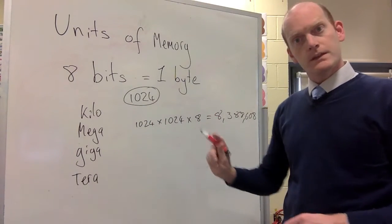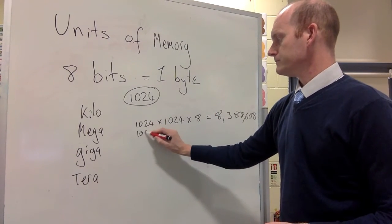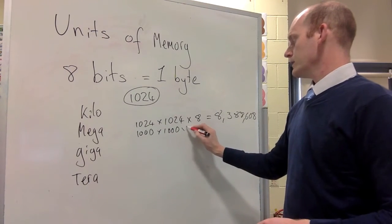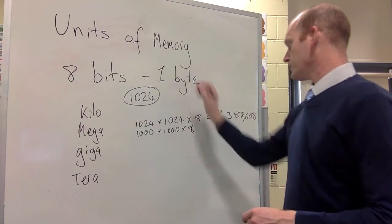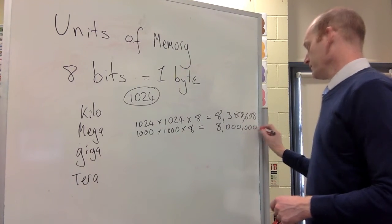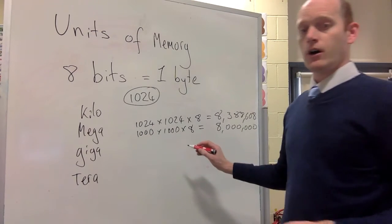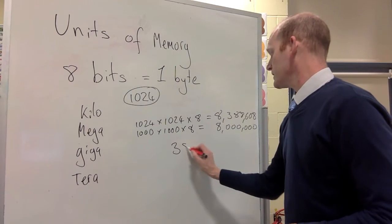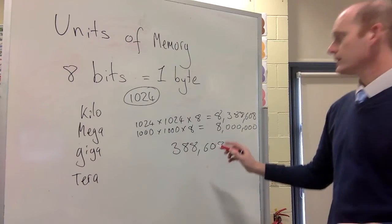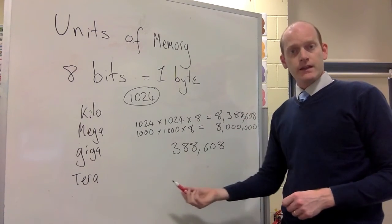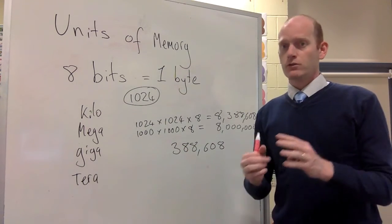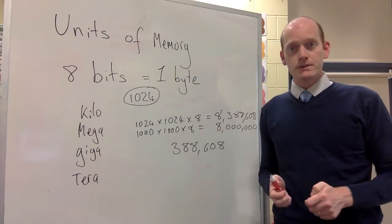Or it means by thousands, in which case it's 1,000 times 1,000 kilos, times by eight for our bytes, and that will give us exactly eight million. So we get a difference of 388,608 bits. Now that's a lot of ones and zeros. And as we get further and further up, this creates even bigger discrepancy.